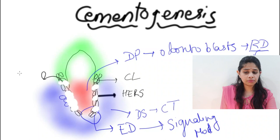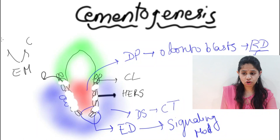These remnants are termed the epithelial cell rests of Malassez, seen within both the cementum and the periodontal ligament. Once disintegration occurs, the cells of the connective tissue directly come in contact with the mantle dentine.